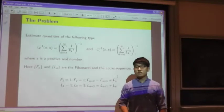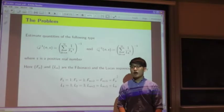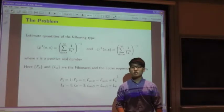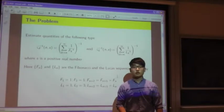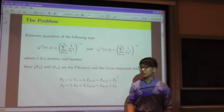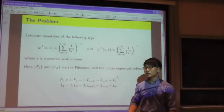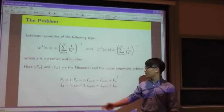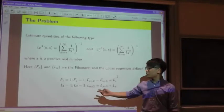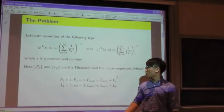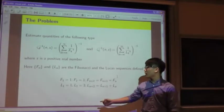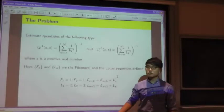The Lucas numbers are a variation of the Fibonacci numbers. They have a similar recurrence relation, where the sum of two consecutive terms leads to the next term. However, the difference is that the first two terms are different — the Fibonacci numbers start with 1 and 1, while the Lucas numbers start with 1 and 3.